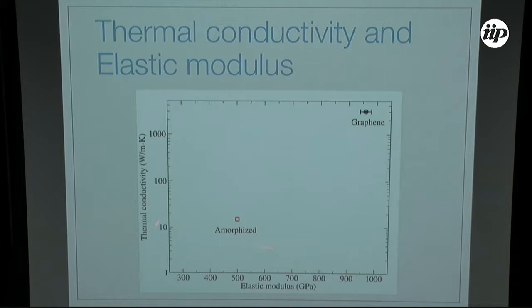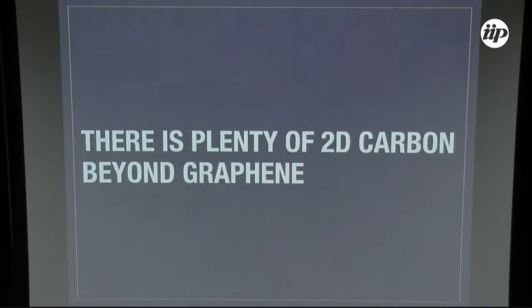So we go to this plot of thermal conductivity versus elastic modulus. Graphene is up here, amorphized graphene is down here. I'm going to keep adding points on this graph.